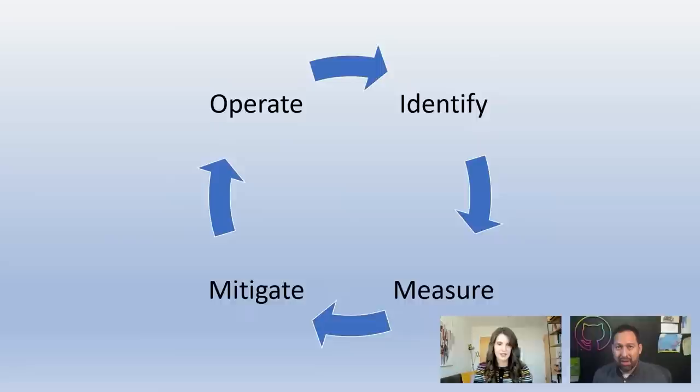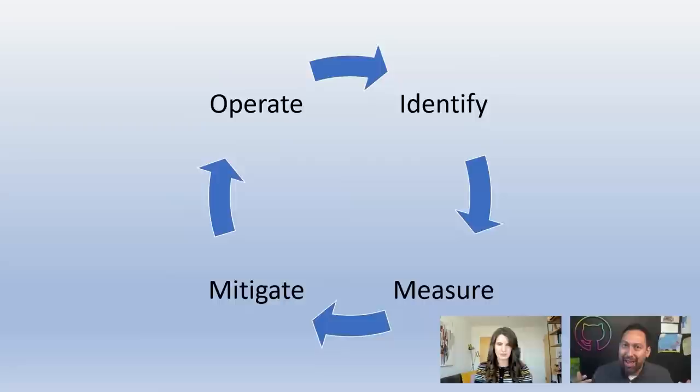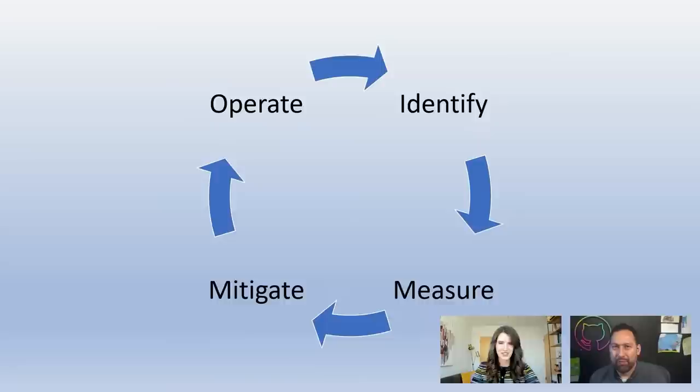This isn't a new concept — generative adversarial networks did similar work, where one model produces a thing and another model checks if it's fake. As they fought each other, they both got a lot better. The difference now is that we have an incredibly powerful language model, and it turns out all of these Responsible AI concerns are language too. It has such a more sophisticated understanding of language that it's actually good at this. We could have done it before, but it wasn't good — so now that we can measure, the question becomes: what do we do about mitigations?